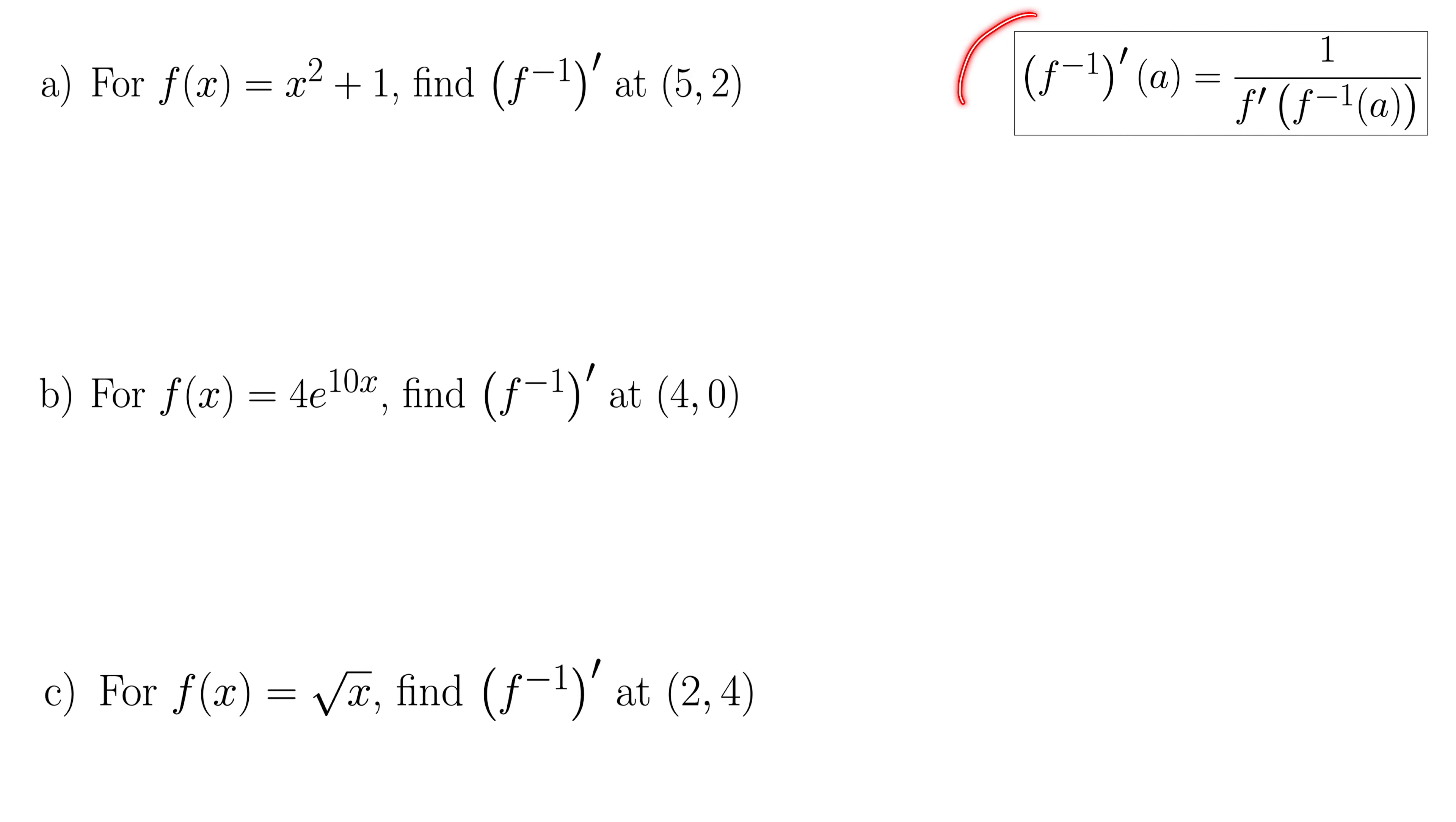So again we have our trusty formula here that was the result of that theorem we saw previously, which is f⁻¹'(a) equals 1 over f'(f⁻¹(a)). So let's figure out what these things are. The thing to understand about these is that when we're talking about the inverse function prime, this point refers to the inverse function. I think that's one of the most challenging things that really gets everything tripped up here. So this (5,2) is seen from the inverse's point of view. So 5 is the a, which tells us that the other point 2 must be f⁻¹(a).